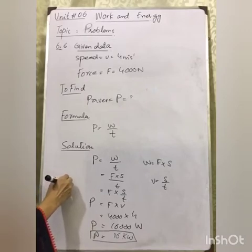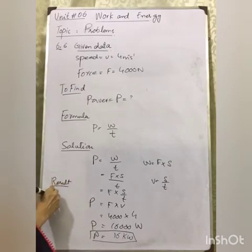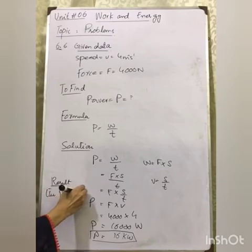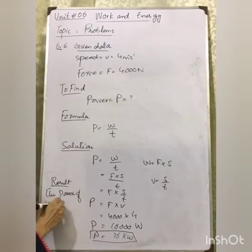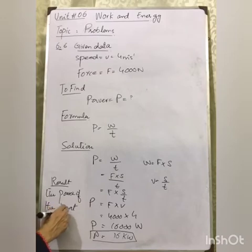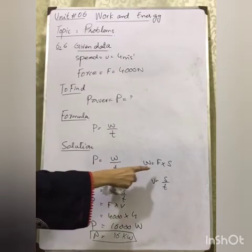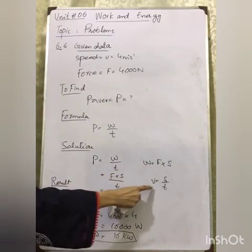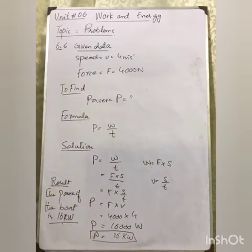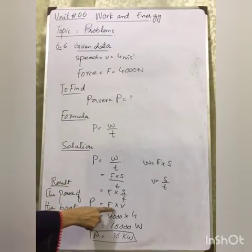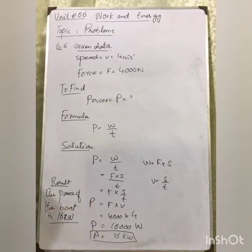Result: the power is 16 kW. Here is the concept of work done, so we need to apply the formula. The velocity is given according to displacement divided by time, and we derive the formula as force multiplied by velocity.